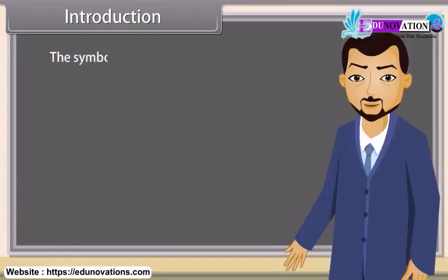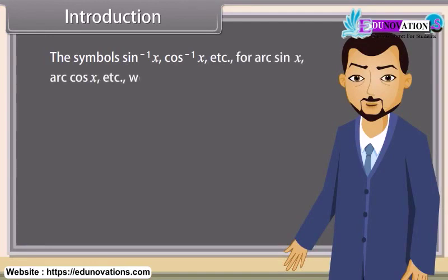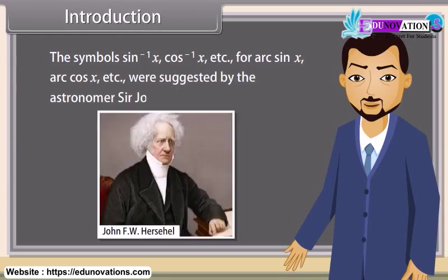The symbols sin⁻¹ x, cos⁻¹ x, etc., for arc sin x, arc cos x, etc., were suggested by the astronomer Sir John F. W. Herschel in 1813. Now let's learn about inverse trigonometric functions.